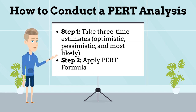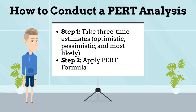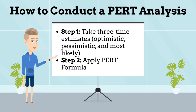Optimistic time: the minimum possible time required to accomplish a task, assuming everything proceeds better than is normally expected. Pessimistic time: the maximum possible time required to accomplish a task, assuming everything goes wrong, excluding major catastrophes.